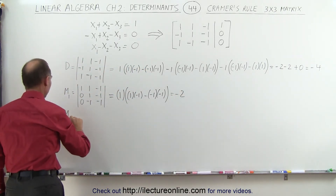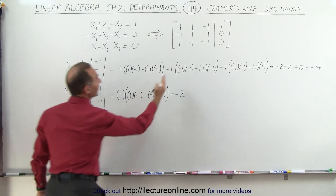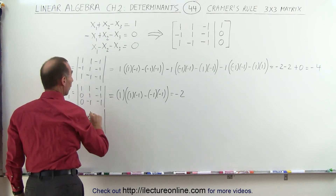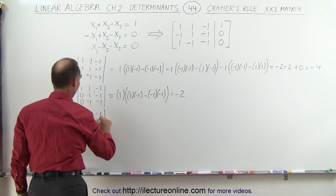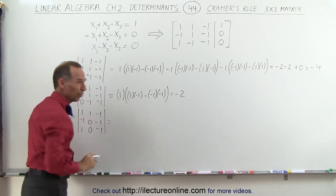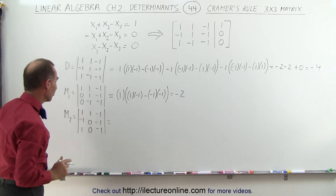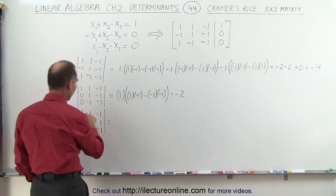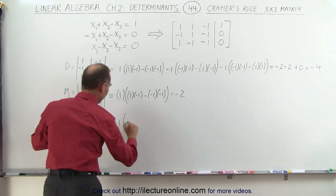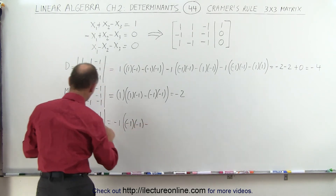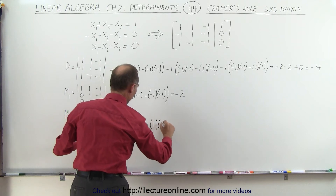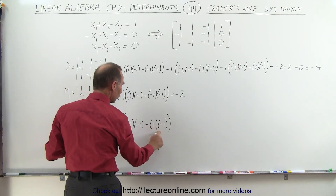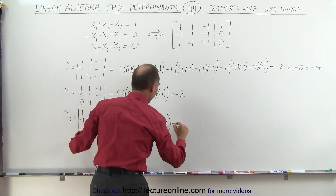For the second matrix M2, we replace the second column with the three constants. So we get: 1, negative 1, 1 in column one; 1, 0, 0 in column two; negative 1, negative 1, negative 1 in column three. With two zeros in the middle column, we take the negative of the top element times (negative 1 times negative 1 minus 1 times negative 1) — that's 1 plus 1 equals 2, times negative 1 gives negative 2.